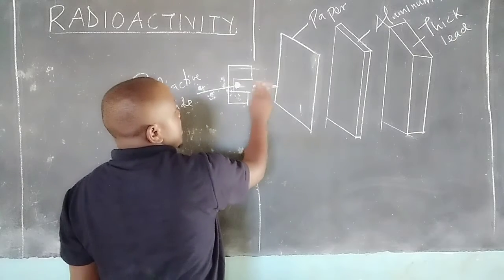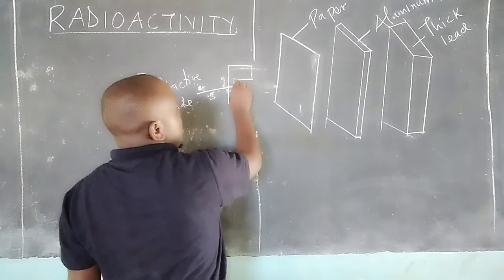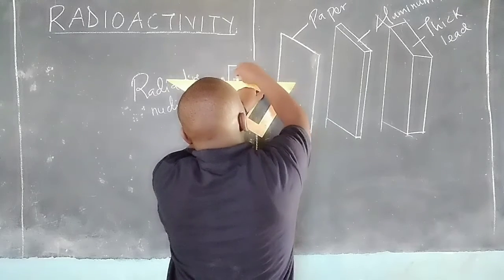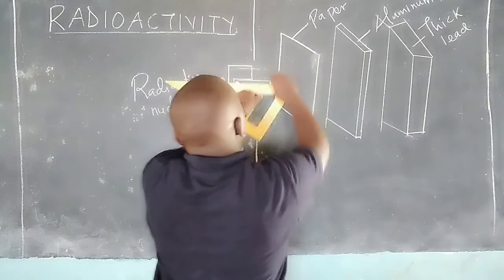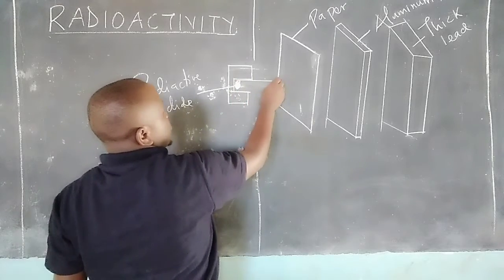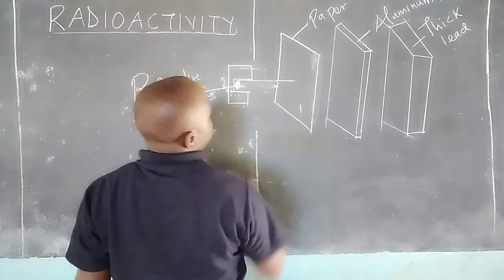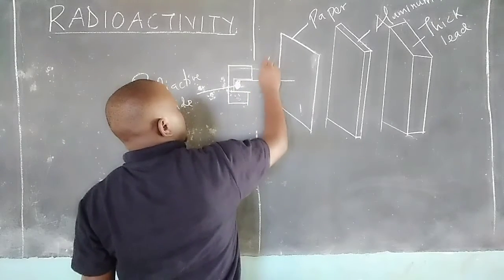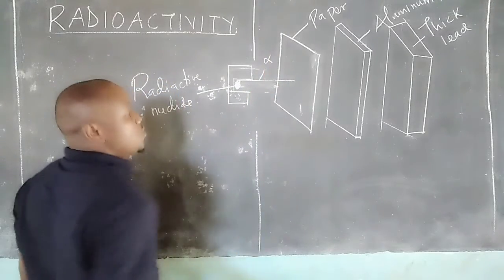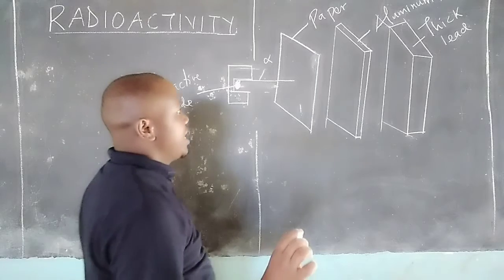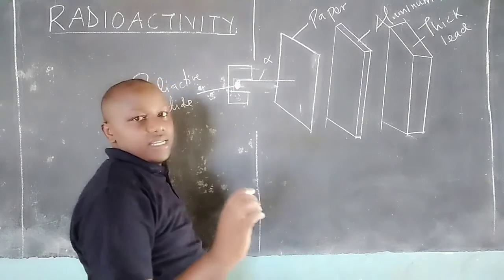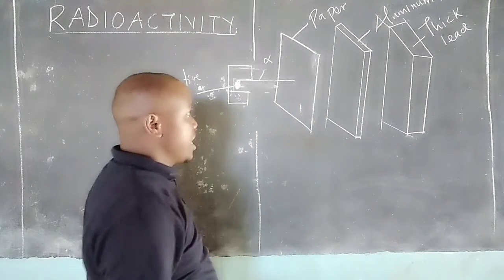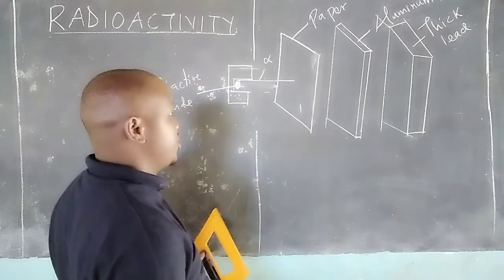We will see the first radiation being stopped by a thin paper. The first radiation will get stopped here by a thin paper. And this one is alpha. Alpha particles — we say they are very heavy and are moving slow, so they just get blocked by a sheet of paper.